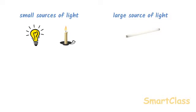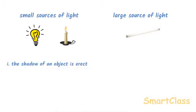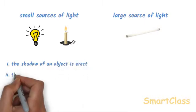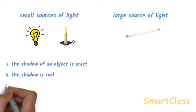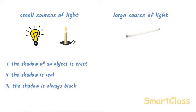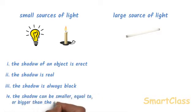The shadow of an object has the following characteristics: The shadow of an object is erect, that is, same side up as the object. The shadow of an object is real as it can be formed on a screen. The shadow is always black irrespective of the color of the object. And the shadow can be smaller than the object, equal to the object, or bigger than the object.